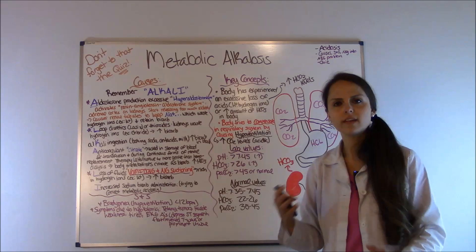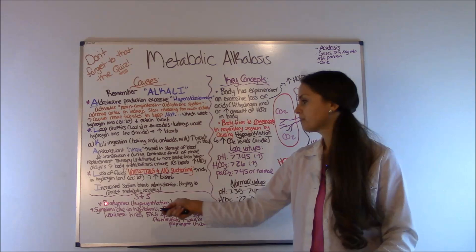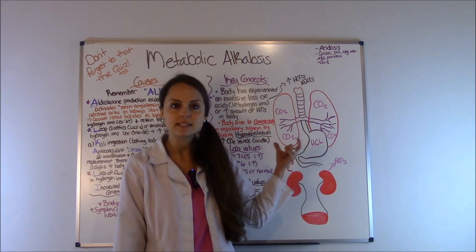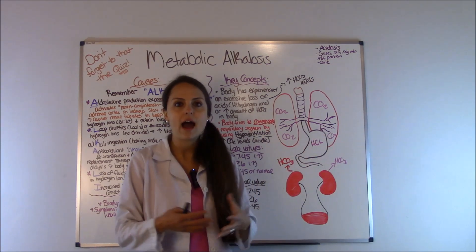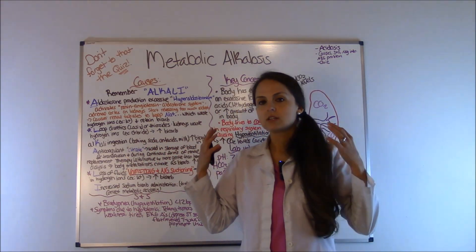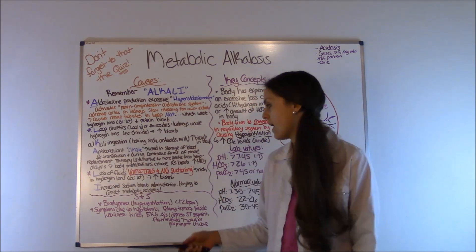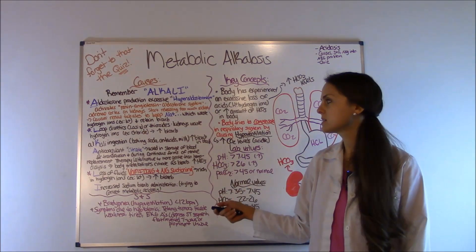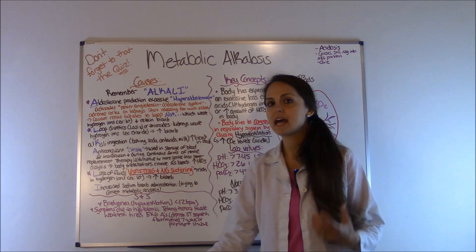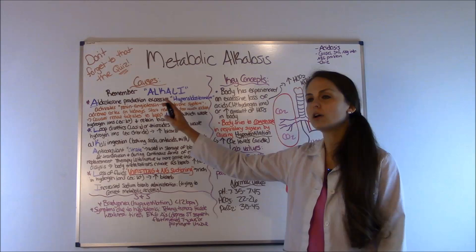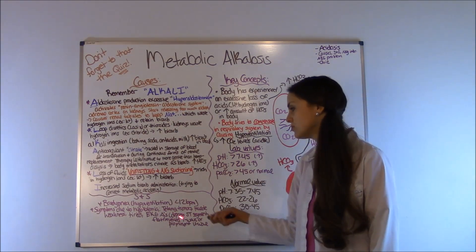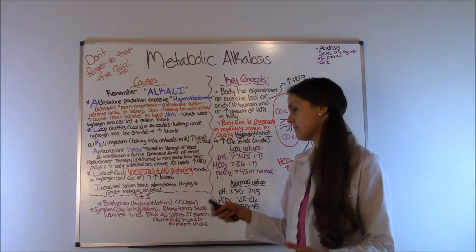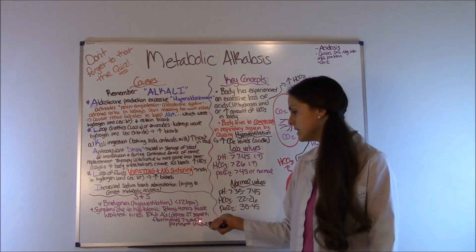Now, how do these patients present? They'll have bradypnea if the body is compensating — the lungs slow down breathing to keep CO2, which is acidic, in the body. Respirations may be less than 12 breaths per minute. You'll also see symptoms of hypokalemia, since many causes involve losing potassium and hydrogen ions — tetany, tremors, muscle weakness, fatigue, and EKG changes such as depressed ST segments, flat or inverted T waves, or prominent U waves.